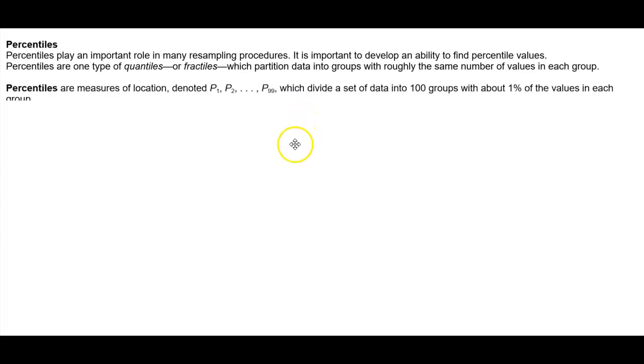Percentiles are measures of location denoted P₁, P₂, dot dot dot, all the way to P₉₉, which divide a set of data into 100 groups with about 1% of the data values in each group.